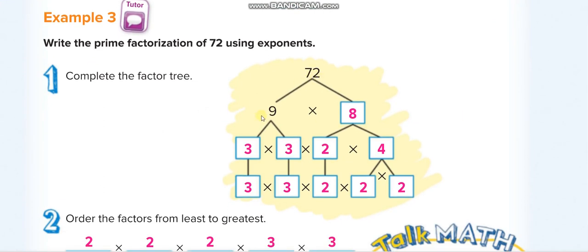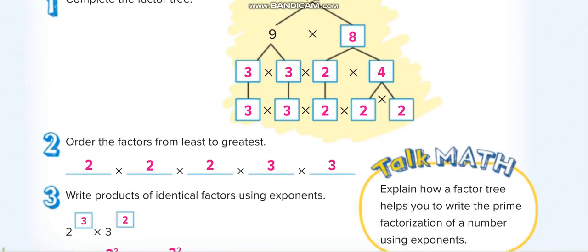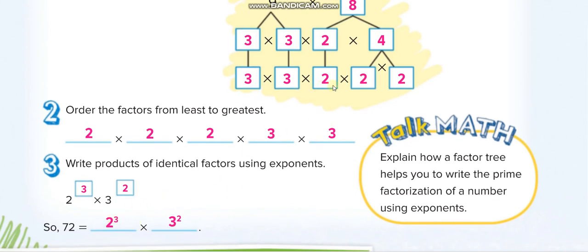Now they make the prime factorization of 72: 9 times 8. Then break 9 into 3 times 3. Break 8 into 2 times 4, then 4 into 2 times 2. You have three 2s, so you write 2³. You have two 3s, so you write 3². So 72 equals 2³ times 3². If you don't know prime factorization, watch my Chapter 2 Lesson 1 video.